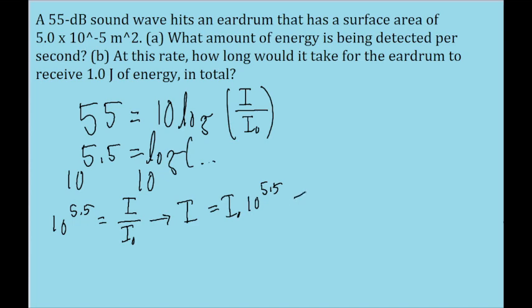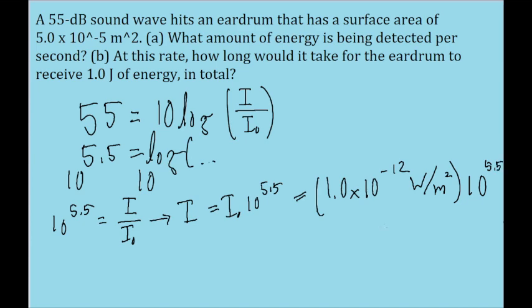I₀ is a constant, and its value is 1.0 times 10 to the power of negative 12 watts per squared meter. So we multiply this by 10 to the power of 5.5. And if we plug this into our calculator, we find that the intensity of the wave is about 3.162 times 10 to the power of negative 7 watts per meter squared.